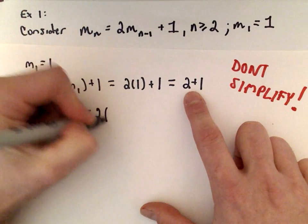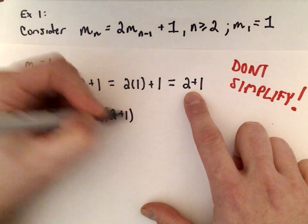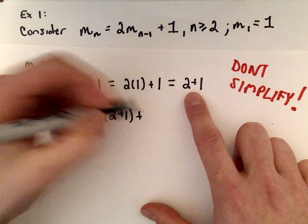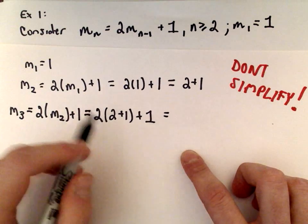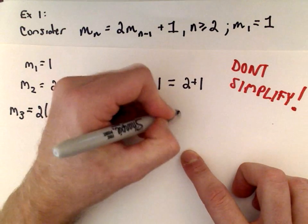M sub 3 is going to be 2 multiplied by m sub 2 plus 1. That's 2 multiplied by what we had previously, which was 2 plus 1. According to the formula, we still have to add 1. I'm going to distribute but keep powers of 2, so 2 times 2 is 2 squared, 2 multiplied by 1 is 2 to the first, and then plus 1.